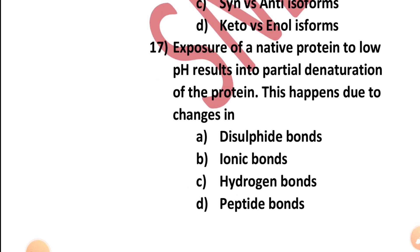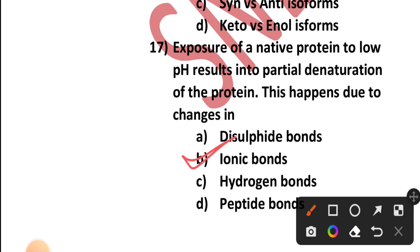Question number seventeen: Exposure of a native protein to low pH results in partial denaturation of the protein. This partial denaturation is due to changes in which bond — disulfide bonds, ionic bonds, hydrogen bonds, or peptide bonds? It is due to changes in ionic bonds. When a native protein is exposed to low pH, partial denaturation is observed because of changes in ionic bonds.